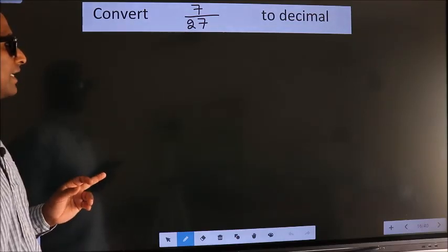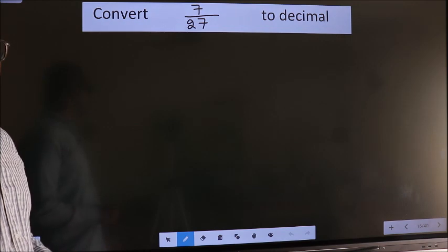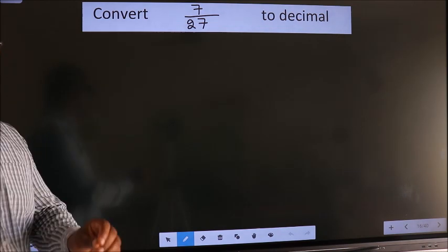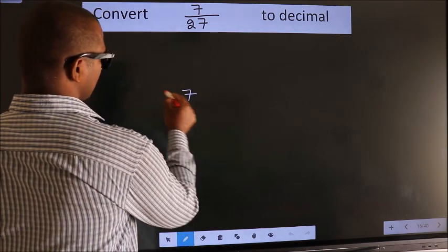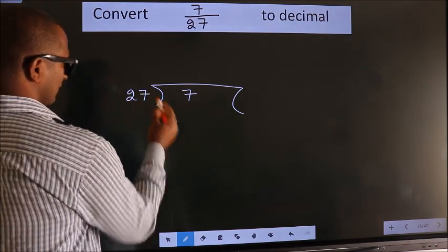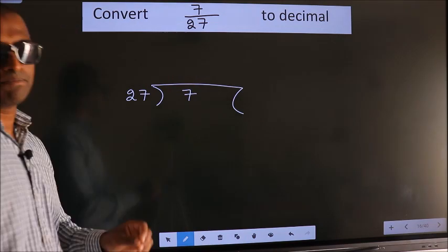Convert 7 by 27 to decimal. To convert this to decimal, we have to divide. To divide, we should frame it in this way: 7 here, 27 here. This is step 1.